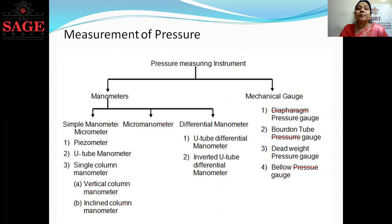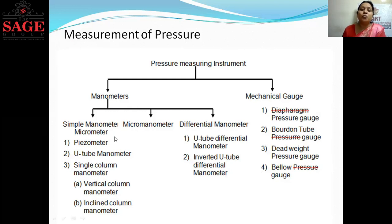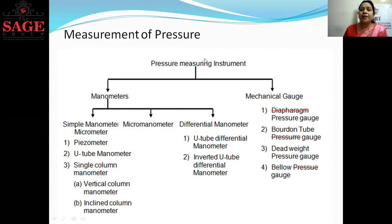This hydrostatic law formula is the basic theory used for pressure measuring instruments. Here is a layout diagram showing different types of manometers and mechanical gauges. Manometer is basically of three types: first is the simple manometer, second is the micro manometer, and third is the differential manometer.